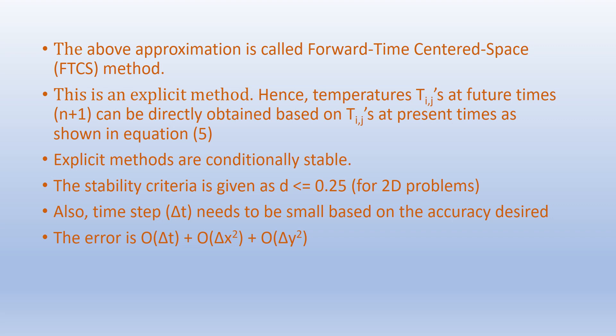Explicit methods are conditionally stable. The stability criterion here is d ≤ 0.25 for 2D problems where Δx equals Δy. Also, the time step Δt needs to be small based on the accuracy desired. The error using the above finite difference approximation is of the order of Δt plus the order of Δx² plus the order of Δy².